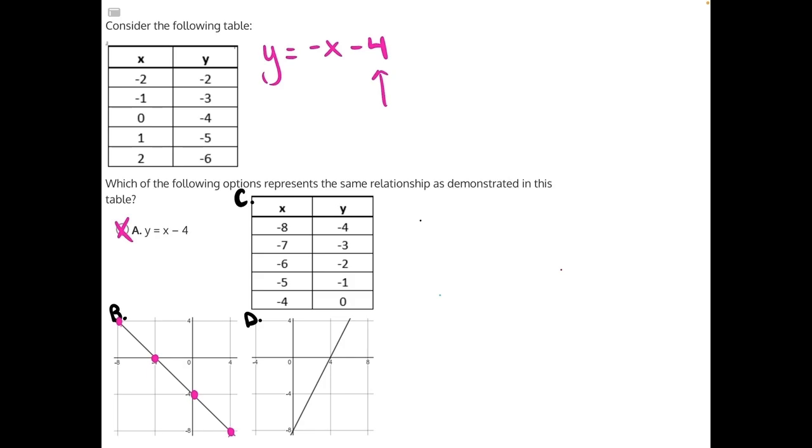For now, let's move on to answer choice D, our other graph, where we see that the y-intercept is not in this graph. It is missing from this graph, so that means answer choice D is incorrect.